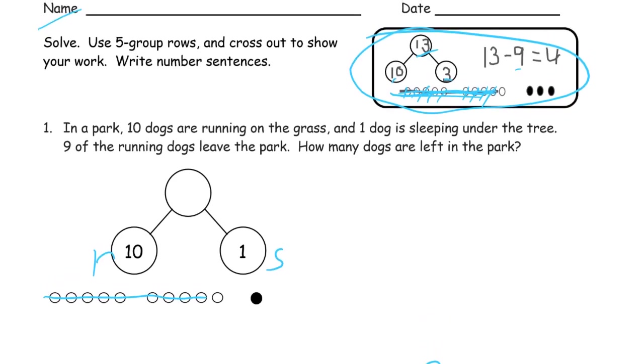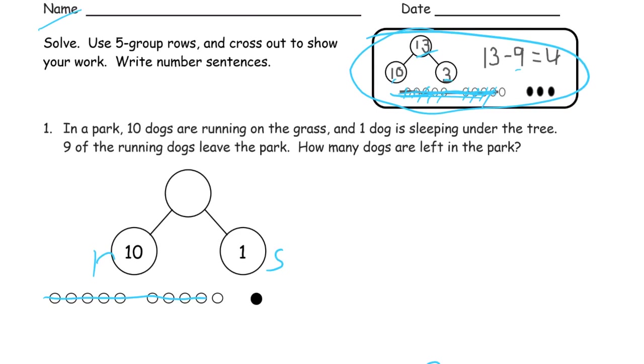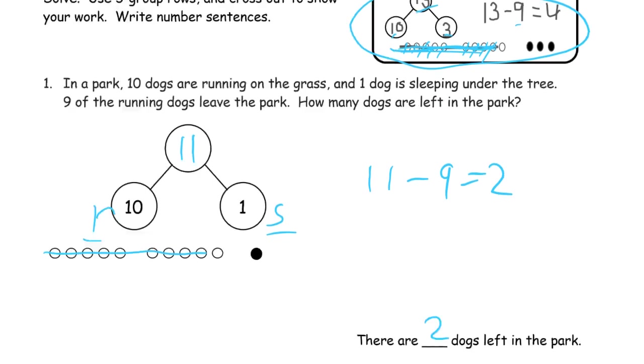Two dogs left in the park, but we need our number sentence still, and we need a whole for this 10 and 1. Those are the parts. The whole has to be 11. So we need 11 dogs minus the 9 who left the park, 2 left in the park. 11 minus 9 equals 2. That's everything we need to have. You have to have these labels, the finished number bond, the crossed out picture, and that number sentence. You have to have all of that.